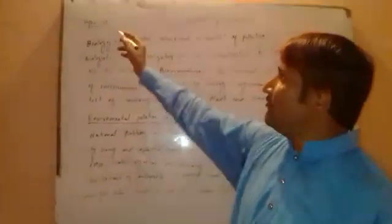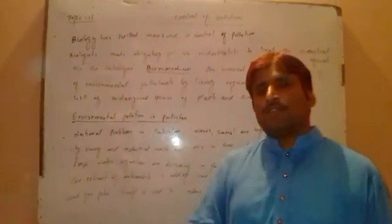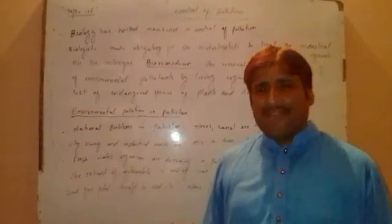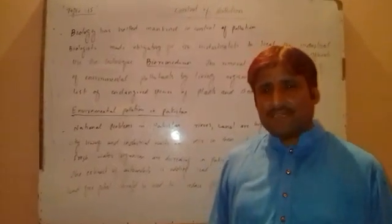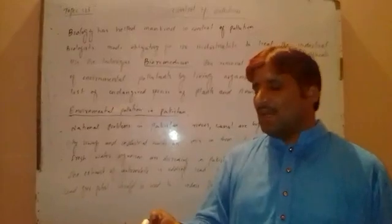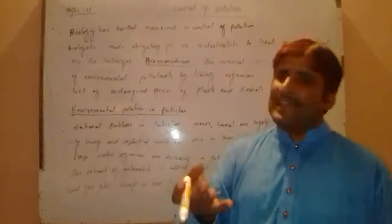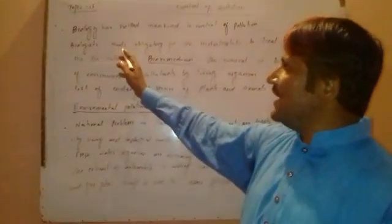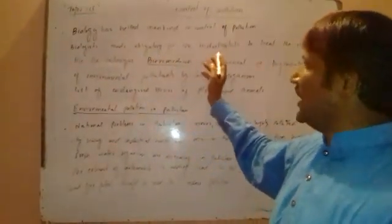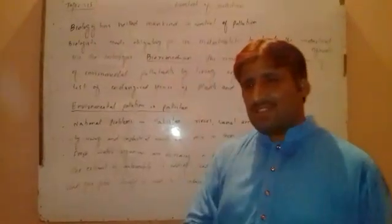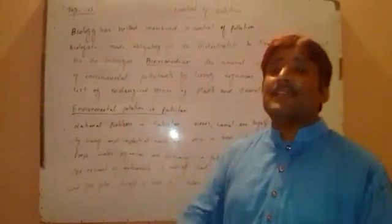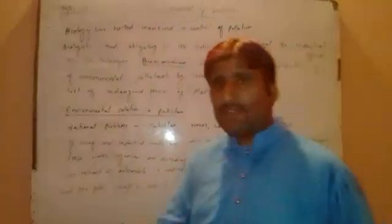Topic 15: Control of Pollution. Biology has helped mankind to control pollution. Biologists are trying to protect the environment from pollution. Biologists have made it compulsory for industrialists to treat industrial waste and equipment.